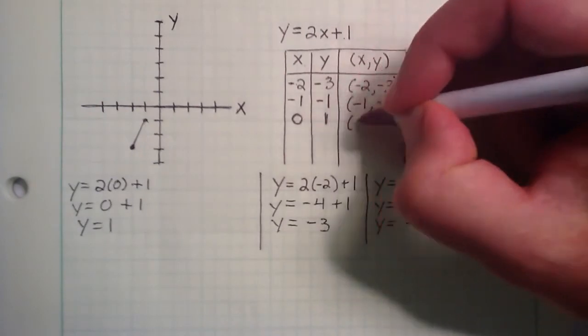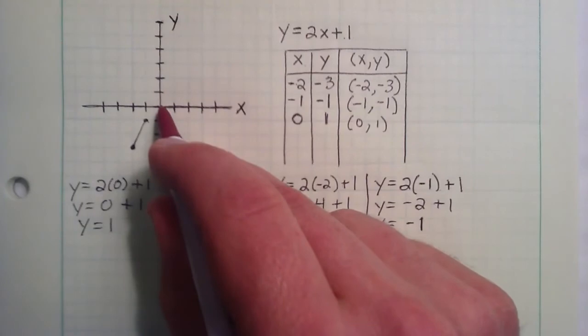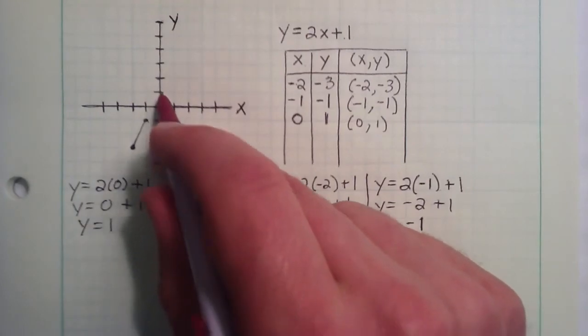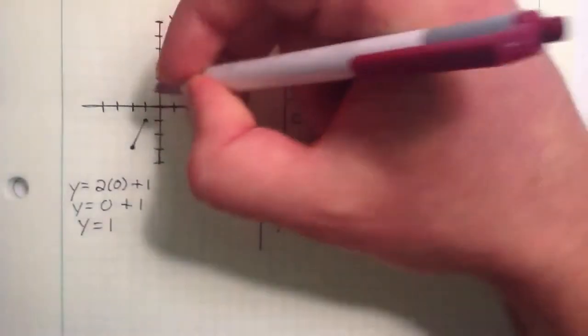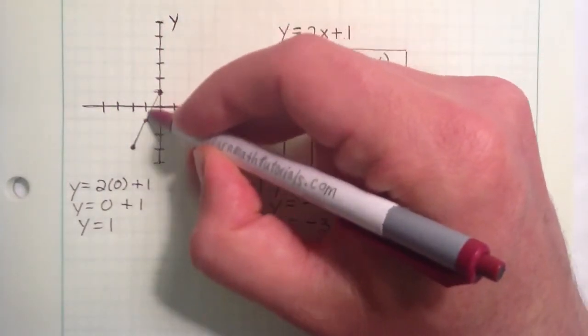Giving us the point 0, 1. The x component of 0 is here. And then counting up 1 unit in the y direction for the y component. Gives us another extension of our line.